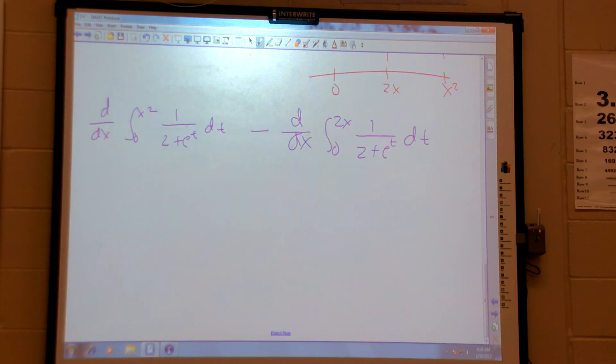So now it's a problem like we just did. If this is anything other than x, chain rule. So first plug it in. But then multiply by its derivative. What is the derivative? 2x. Just the derivative of this. We don't care about the derivative of the actual function.